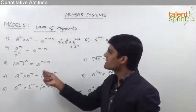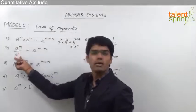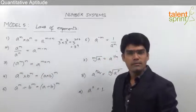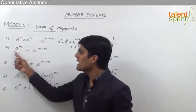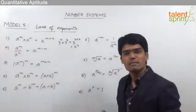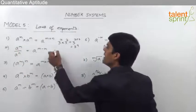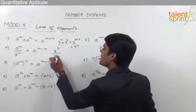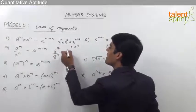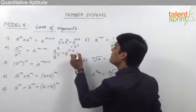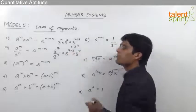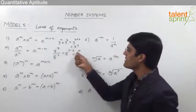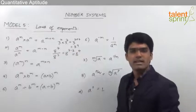The next law is: a power m divided by a power n equals a power m minus n. Whenever the bases are equal and in division form, the powers can be subtracted. For example, 8 power 7 divided by 8 power 3 can be taken as 8 power 7 minus 3, which is equal to 8 power 4.